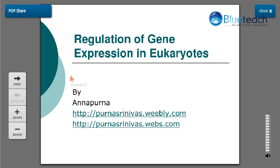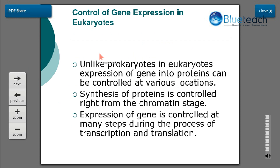In this session I will be discussing regulation of gene expression in eukaryotes. Eukaryotic organisms have a very well-defined nucleus and gene expression — the transformation of information from gene to protein — takes place in a very well-planned manner to produce a particular protein in a desired quantity. Unlike prokaryotes, in eukaryotes expression of genes into proteins can be controlled at various locations, right from the chromatin stage through transcription and translation.